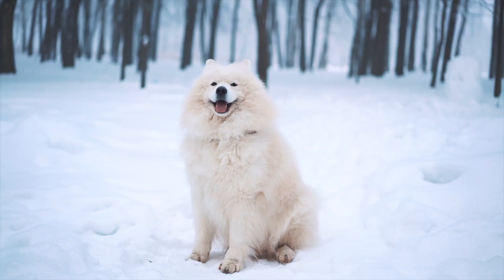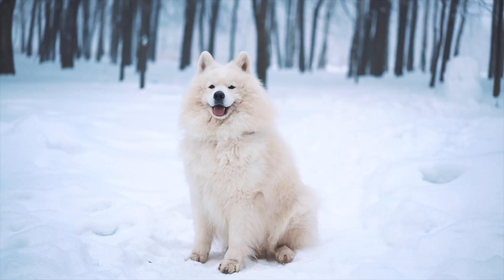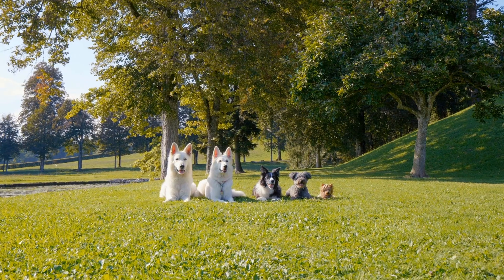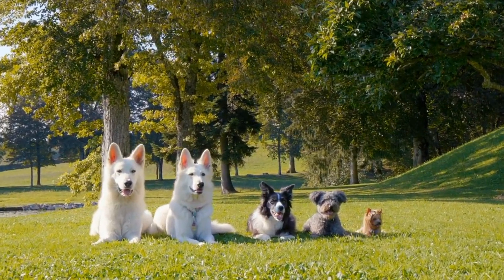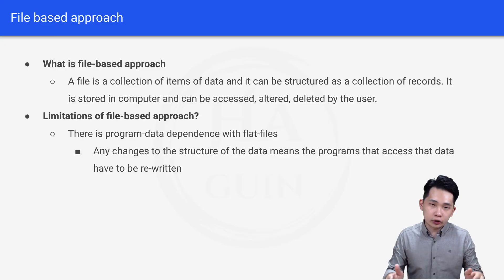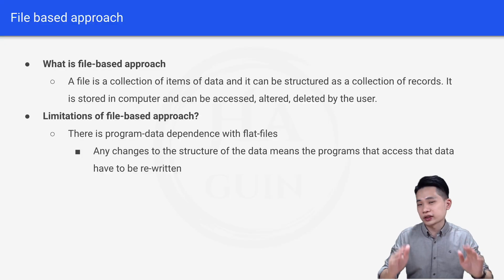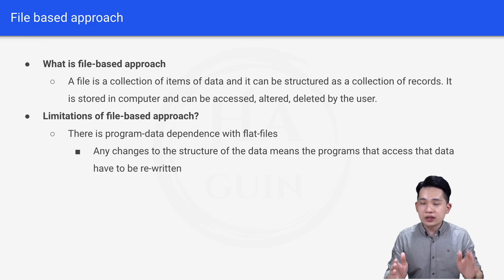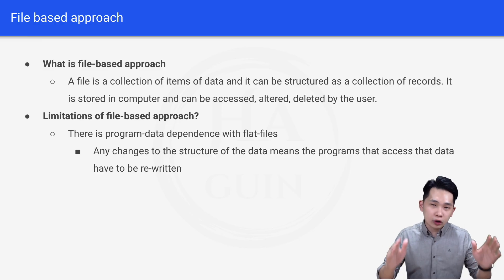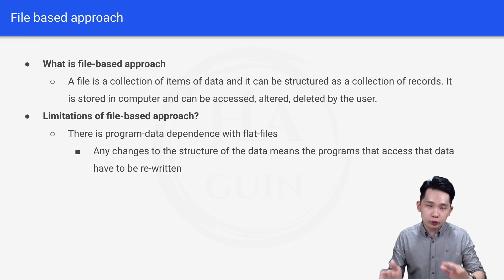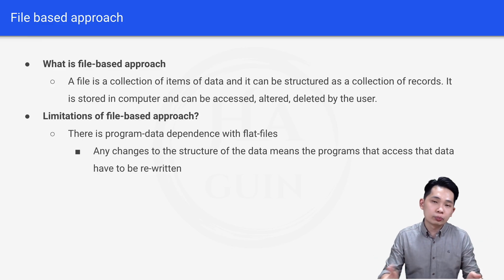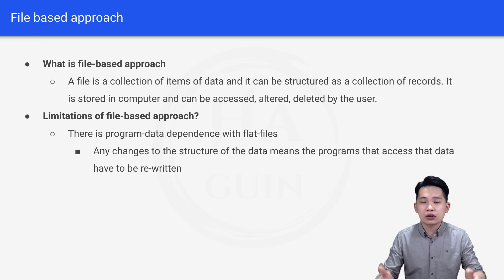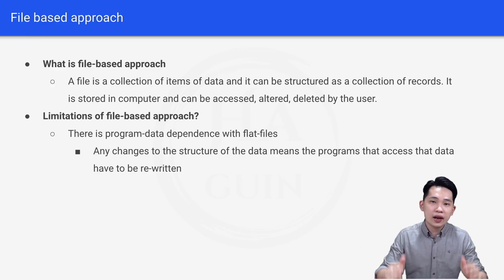Let's look at one example. Let's say you have a file that stores information about dogs, and this file stores the dog's name and the dog's type. Now if you try to add one more attribute — the dog's color — the file will contain one extra attribute, and most probably the program written to read that file has to be rewritten because the file format has changed.